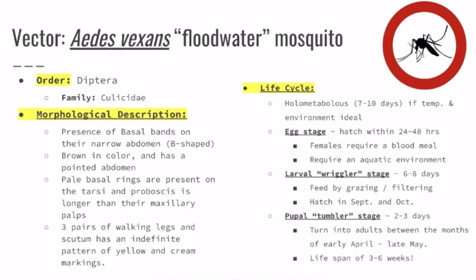Next, we have the larval or wiggler stage. This usually lasts six to eight days; they feed by grazing and filtering and usually hatch between September and October. Then we have the pupal or tumbler stage, which is about a two to three day process, and they turn into adults between the months of early April and late May. After this, their lifespan is about three to six weeks.